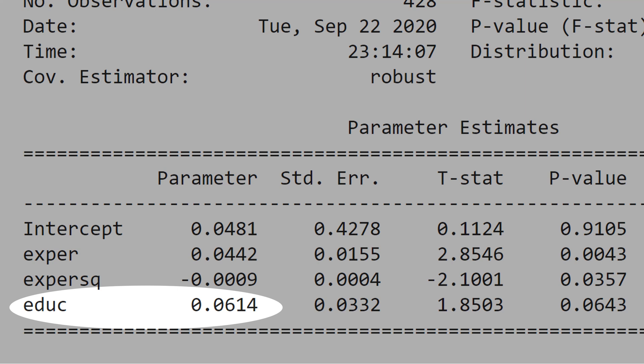We think that ordinary least squares overestimated the impact of education on wage, because ordinary least squares is not controlling for omitted variable bias, the ability.